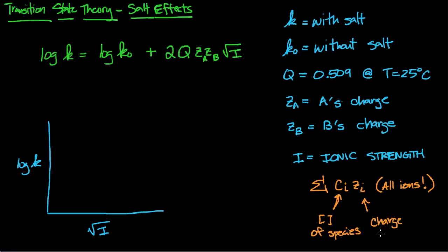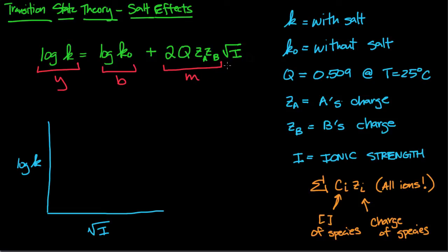Now that we know what the variables are, let's look at this equation. You'll notice it's really of the form y equals mx plus b, so if you graph it you can get the slope, the intercepts, and all that good stuff and solve for variables if you were presented with a graph of log k versus square root of I on a test. There are three possible scenarios.